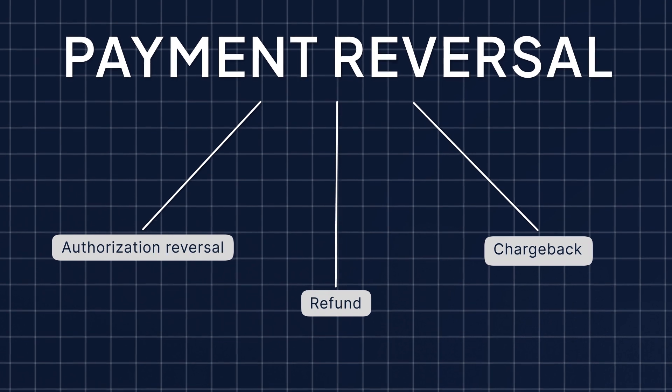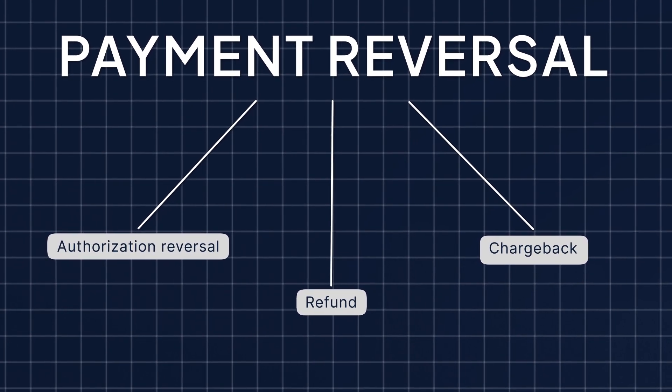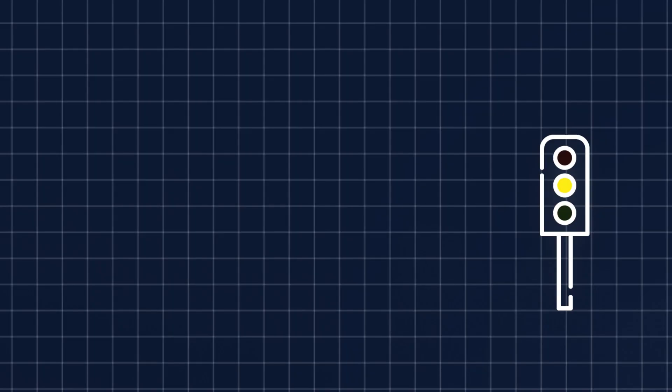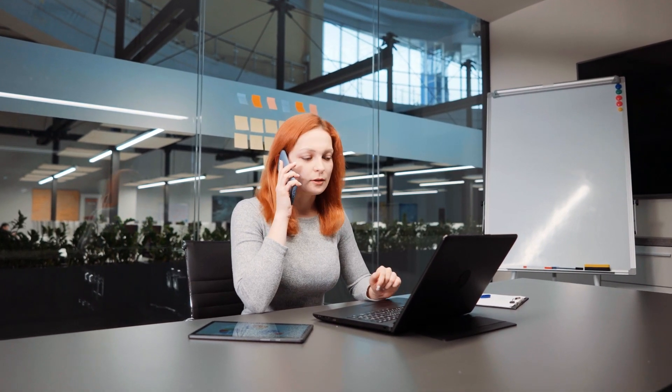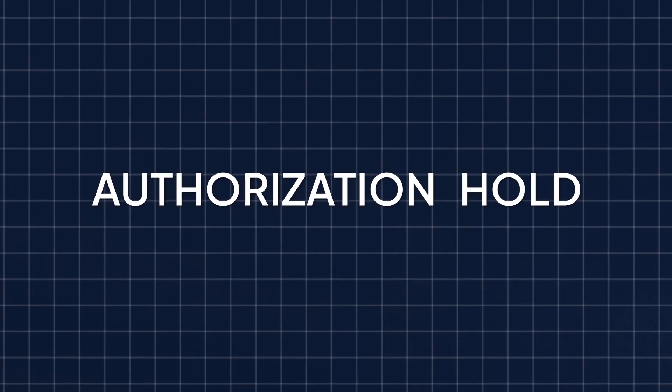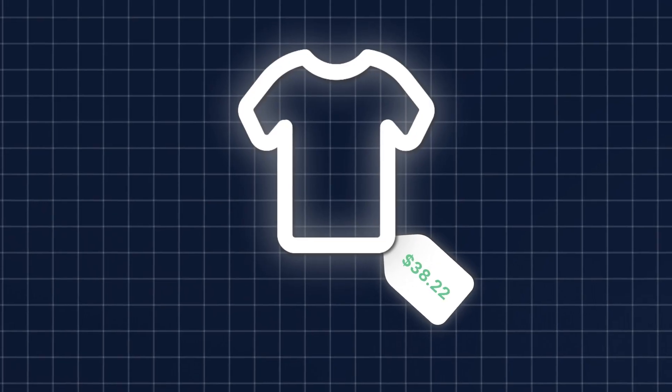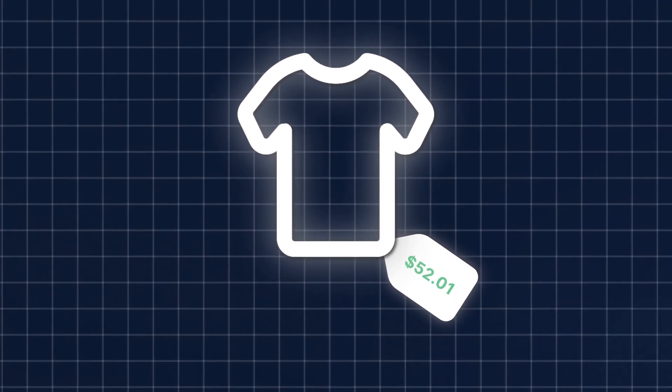An authorization reversal happens before funds are withdrawn from the cardholder's account — it's like slamming on the brakes before running through a red light. This can happen when the merchant finds out there's a problem with a specific payment and reaches out to the cardholder's bank to prevent the transaction from going through. An authorization hold can be put on the account to make sure there's enough funds. Another example is when a seller accidentally charges the customer an incorrect amount but swiftly reverses the charge without the customer knowing. This is a solid option for merchants since there are no fees, refunds, or product returns associated with it.